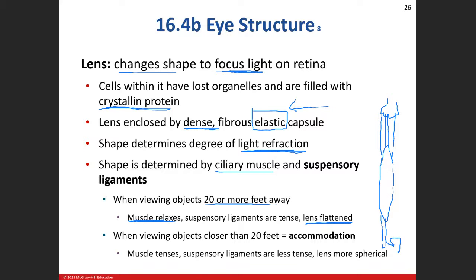When looking at something close — for example, shifting from distant mountains to a nearby phone — the lens becomes more spherical. This happens because the ciliary muscle contracts, becoming tight, which causes the suspensory ligaments to go loose. With less tension on the lens, it rebounds into its original fat, rounded shape, which bends light rays more.